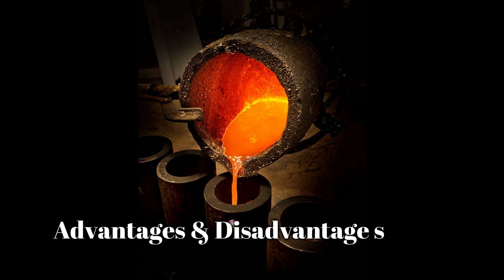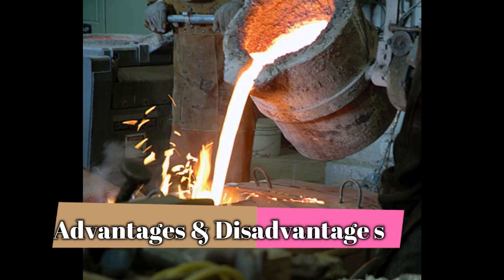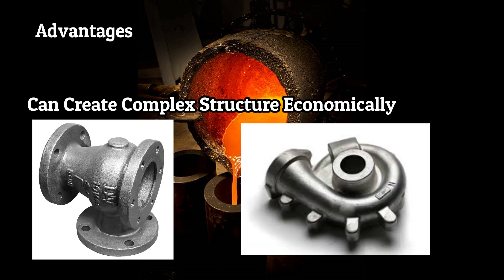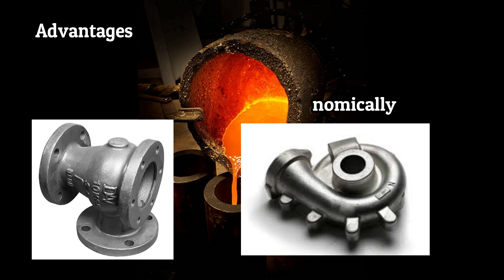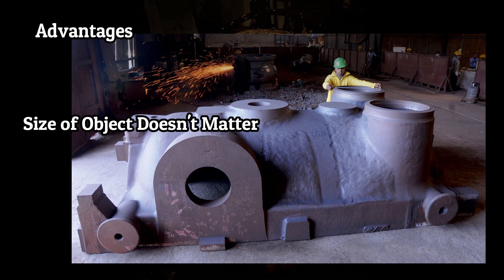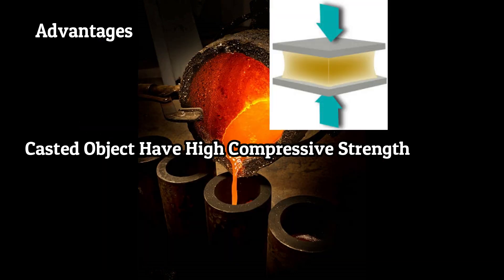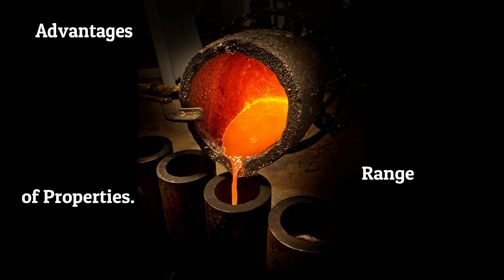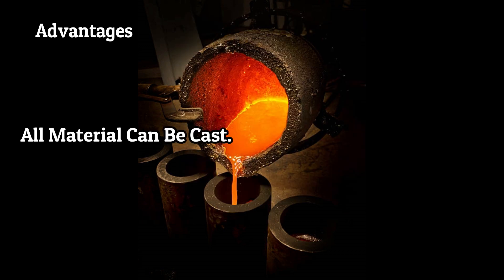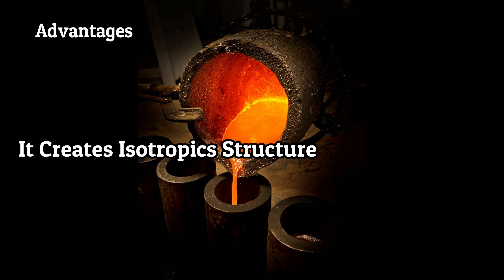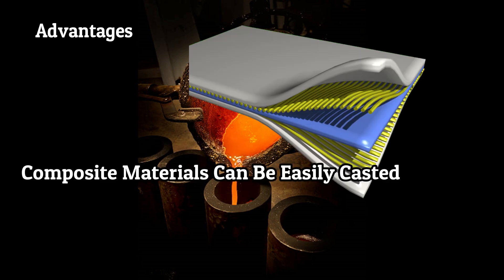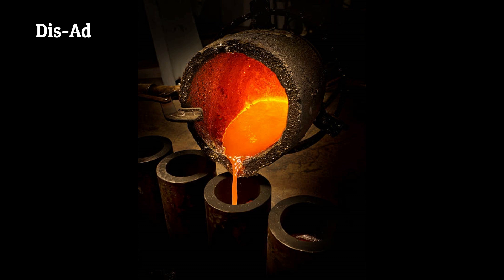Casting has the following advantages over other manufacturing processes. It can create any complex structure economically. The size of the object doesn't matter for casting. The casting objects have high compressive strength. All structures made by casting have a wide range of properties. This can create an accurate object. All materials can be cast. It creates isotropic structure. It is the cheapest among all manufacturing processes. Composite components can be easily made by casting.